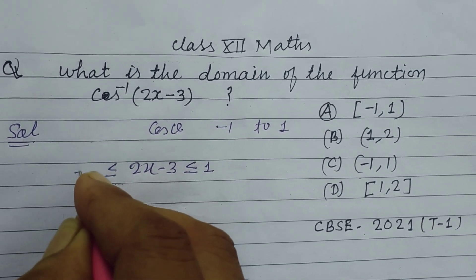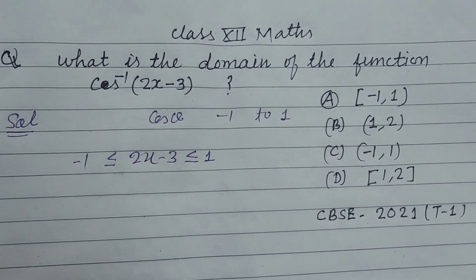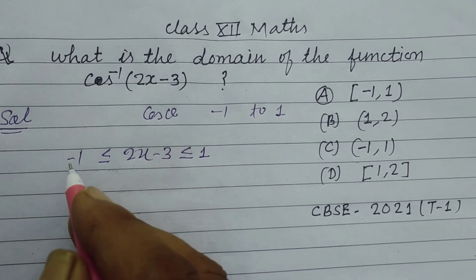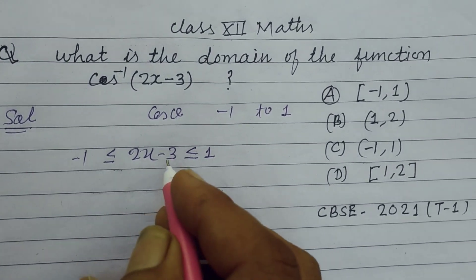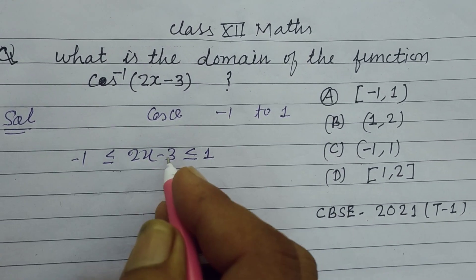And minus 1 less than equal to 2x minus 3. So theta lies between minus 1 to 1. Now we add plus 3 in all terms.